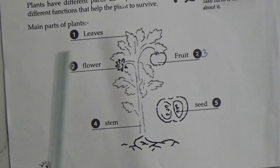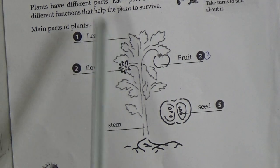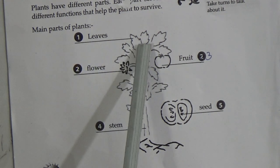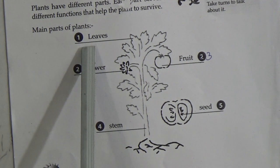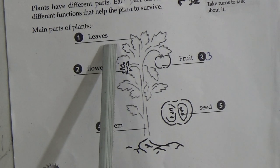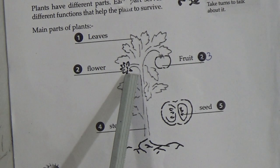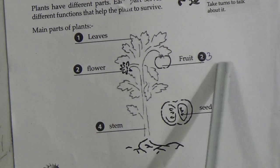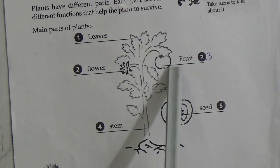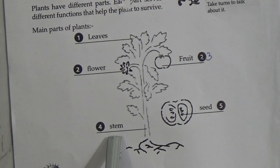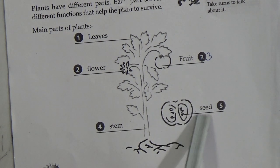Here are the main parts of plants. Number one is leaves — spelling: L-E-A-V-E-S. Number two is flower — spelling: F-L-O-W-E-R. Number three is fruit — spelling: F-R-U-I-T. Number four is stem — spelling: S-T-E-M. And number five is seed — spelling: S-E-E-D.